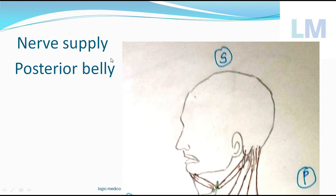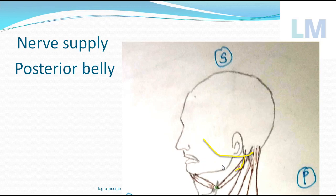Nerve supply: since it has two bellies — posterior and anterior — the nerve supply is a bit more complex. The posterior belly is supplied by the motor nerve of the face. This nerve divides into five branches; it is called the facial nerve. So the posterior belly of the digastric is supplied by a branch of the facial nerve, from the trunk of the facial nerve before it divides into five branches.